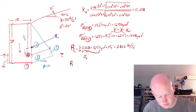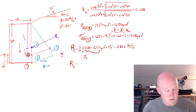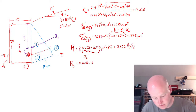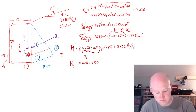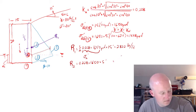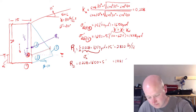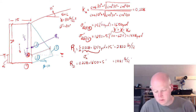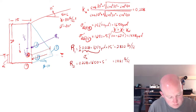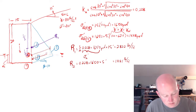We need to calculate R2 and R3. R2 is a rectangle, so the area is just base times height. The base is 0.228 times 1650, multiplied by the height of 5 feet. We get 1881 pounds per linear foot of wall. That resultant acts at the center — halfway between point B and point T.